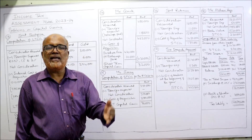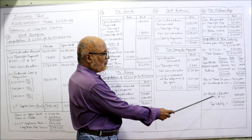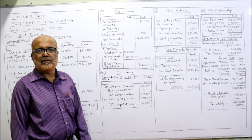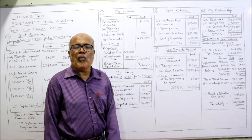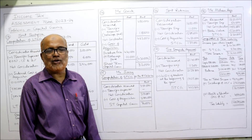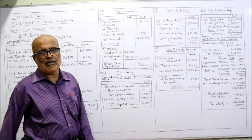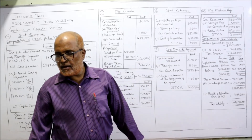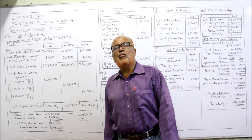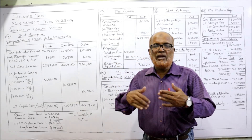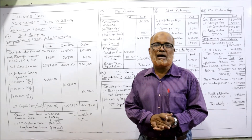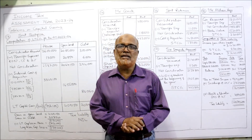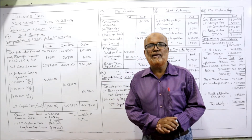Health and Education Cess is 4%, mandatory and compulsory. 4% of ₹1,16,15,000 = ₹4,64,600. Final tax liability: ₹1,16,15,000 + ₹4,64,600 = ₹1,20,79,600. This is the tax liability of Mr. Mohan Raju, a super senior citizen. This problem also demonstrates surcharge computation for the first time in this series. This is the end of problem number 18; we will continue with the next problem in the next video.